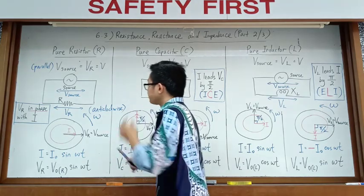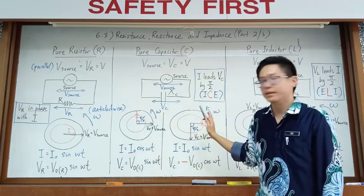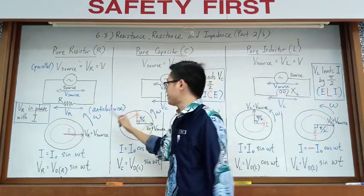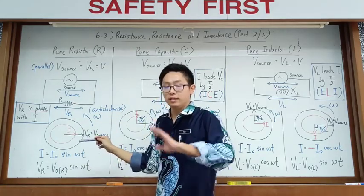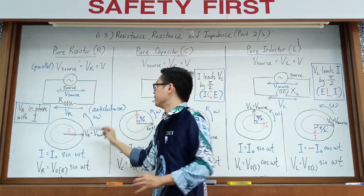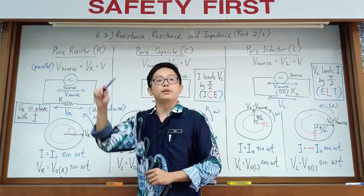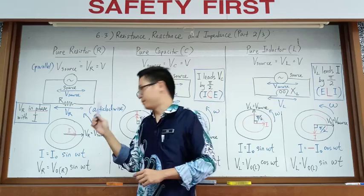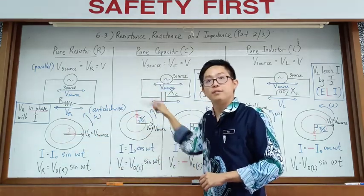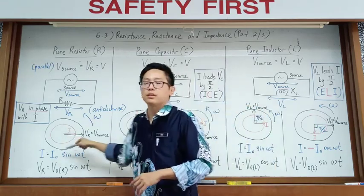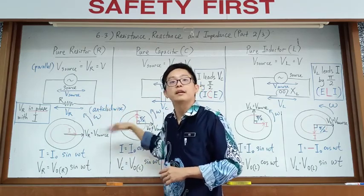Now here is the phasor diagram. Our phasor diagram always rotates anti-clockwise — only anti-clockwise. This rotation means the current and voltage change sinusoidally, like a sine graph — they increase, decrease, and then change direction to the opposite direction.